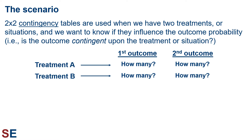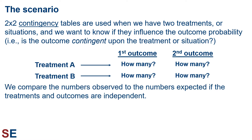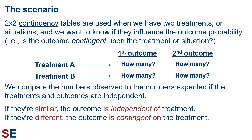For example, say we have two treatments, A and B. The scenario we're interested in is how many observations or individuals end up in the first and second outcomes. We compare the numbers observed in these four categories to the numbers expected if the treatments and outcomes are independent of one another. If the observations and expectations are similar, the outcome is independent of treatment. But if the observations and expectations are different, the outcome is contingent on the treatment and there is a non-random relationship between the treatment and the outcome.